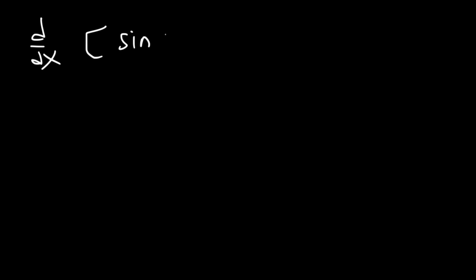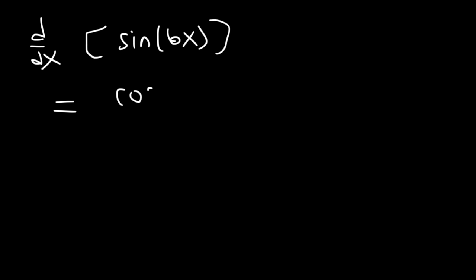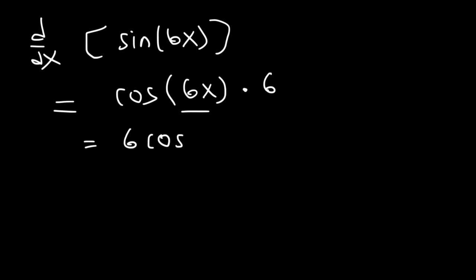Here's another example. Find the derivative of sine of 6x. The derivative of the outside part of the function, sine, is cosine. You've got to keep the inside function the same, then multiply it by the derivative of the inside function. The derivative of 6x is 6, so the answer is simply 6 cosine 6x.